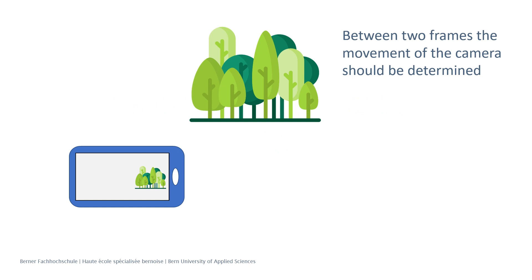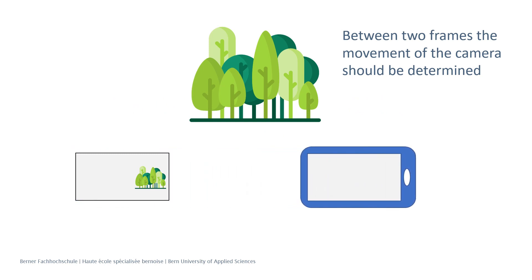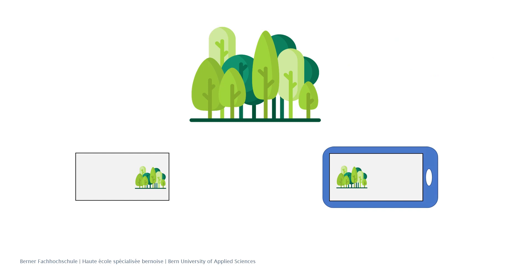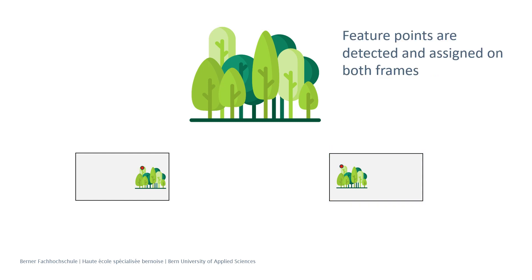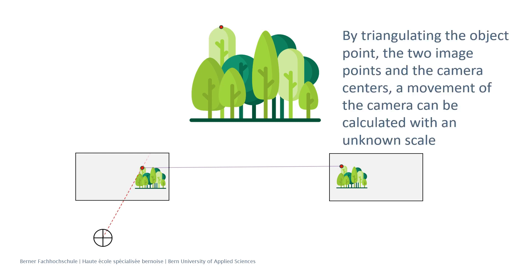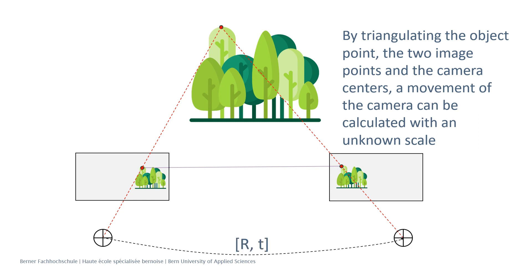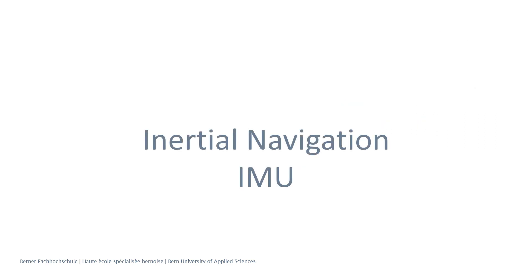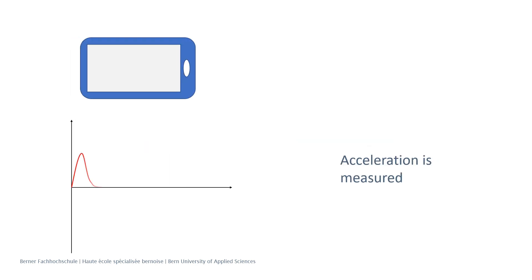Between two frames, the movement of the camera should be determined. Feature points are detected and assigned on both frames. By triangulating the object point — the two image points and the camera centers — the movement of the camera can be calculated, with an unknown scale.